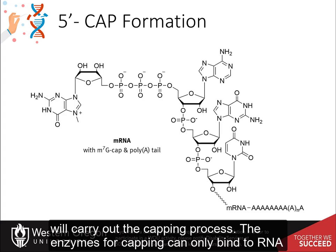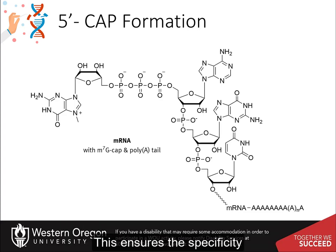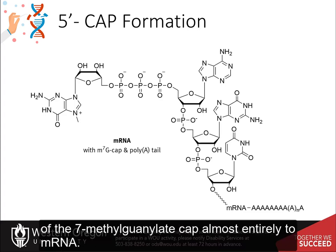The enzymes for capping can only bind to RNA polymerase II that is engaging in messenger RNA transcription. This ensures the specificity of the seven-methylguanosine cap almost entirely to messenger RNA.